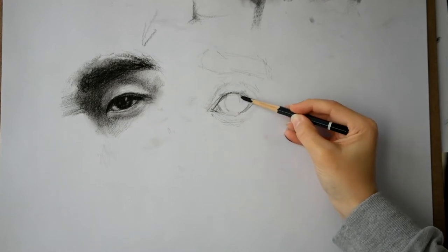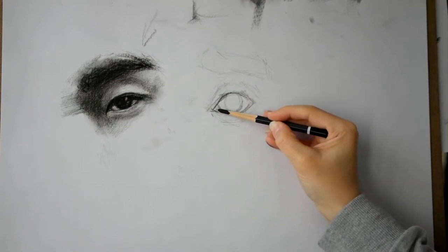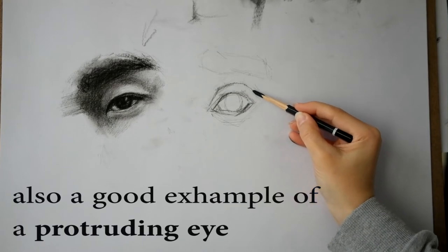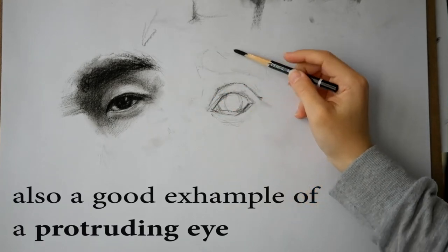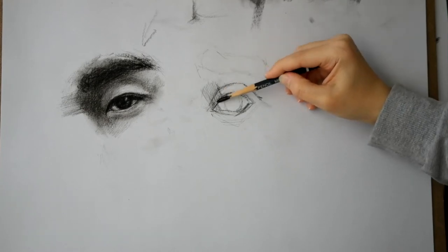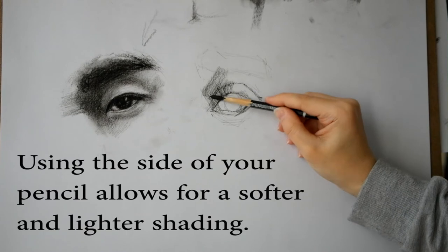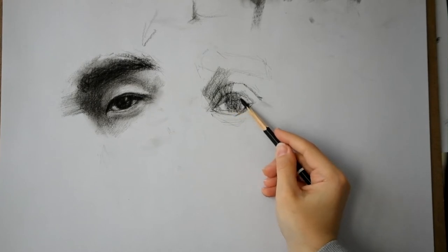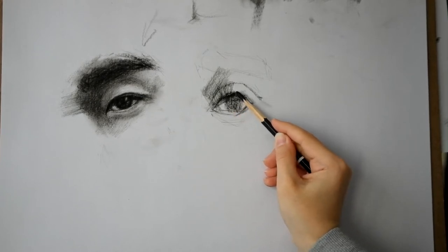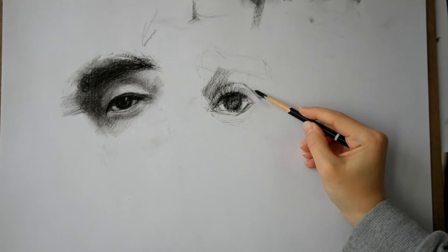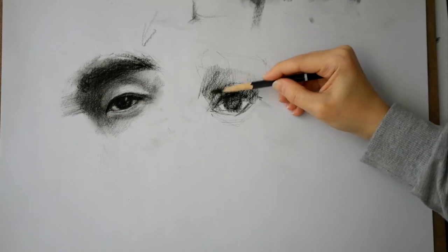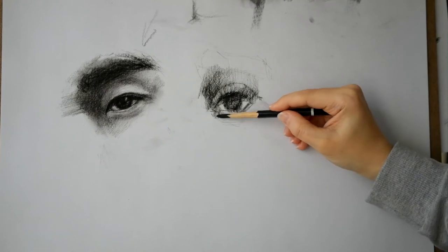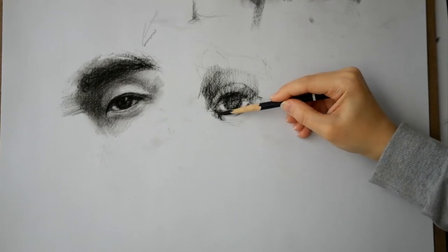We have the iris quite exposed, and we have an upper eyelid that is forming a very deep crease. We can already see how it contrasts to the Asian eye next to it. We're starting with a little bit of shading — lightly, but surely.